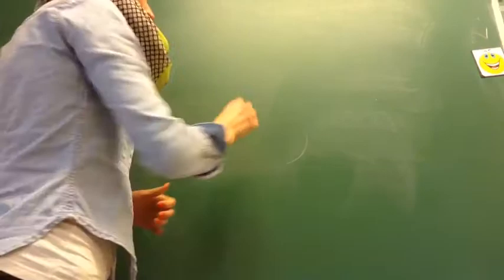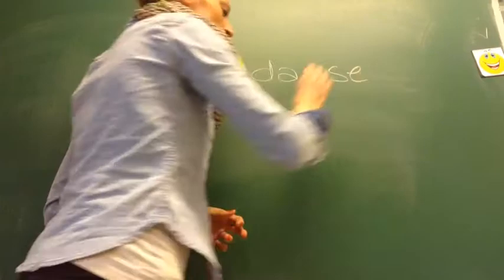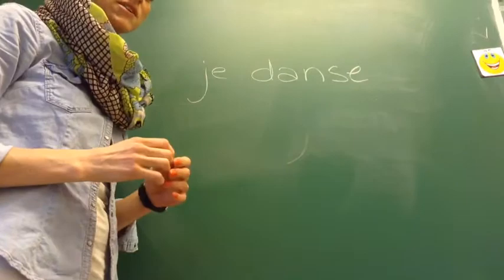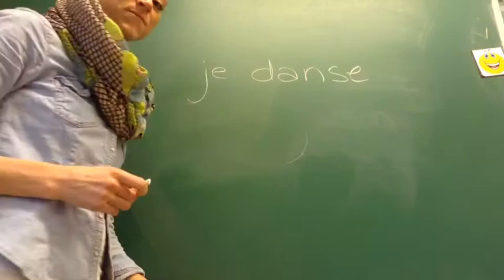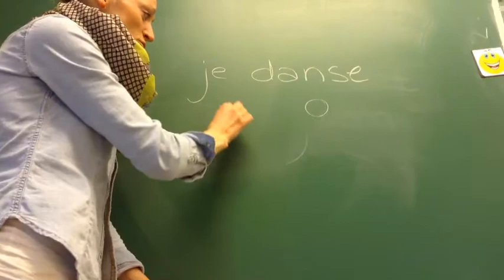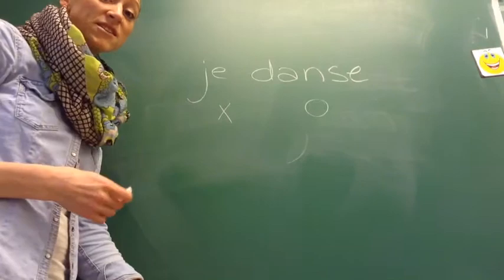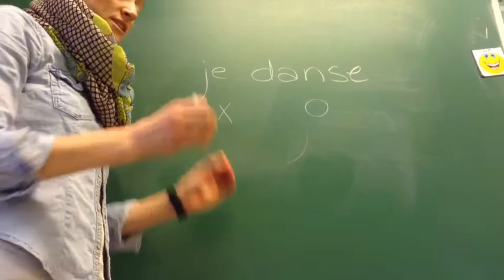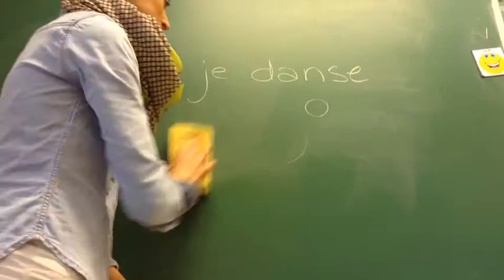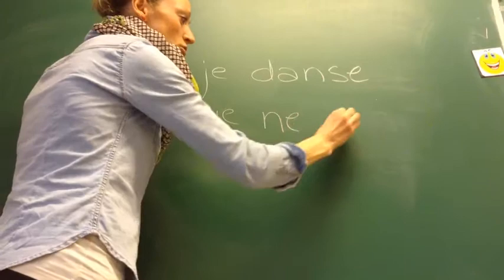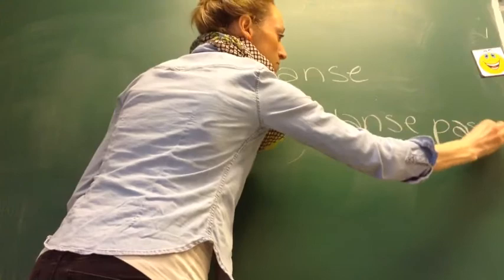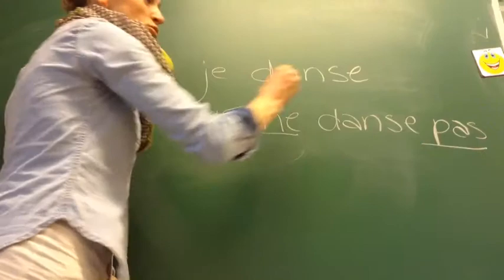Når man for eksempel vil sige 'jeg danser ikke', putter man nægtelsen rundt omkring verbet. Hvis vi starter med bare at lave en sætning uden nægtelse, hedder den 'jeg danser'. På dansk sætter man bolle under udsagnsledet og kryds under grundledet – det er det samme på fransk. Når man vil lave en nægtelse og sige 'jeg danser ikke', skriver man 'je ne danse pas'. Man putter altså ne og pas rundt omkring danse.